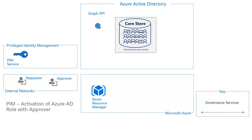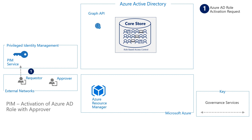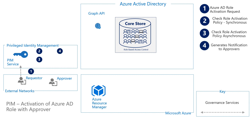Let's say I need to administer Office 365 and I require approval before I can do so. In step one, a request is sent to the PIM service saying who I am and what services I'm trying to get access to. In step two, the asynchronous policy is checked. In step three, when the asynchronous policy is checked, it would see that I require workflow approval. Because of this, in step four, a notification is sent out to the approver.